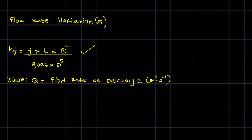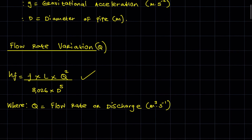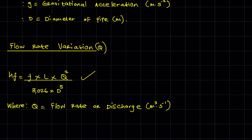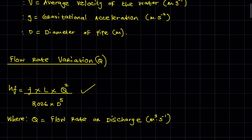Those are the two formulas under Darcy's formula. You can use either variation — it doesn't really matter. If you've been given the velocity, you can calculate Q using Q = A × v, and then substitute into the flow rate variation of Darcy's formula.